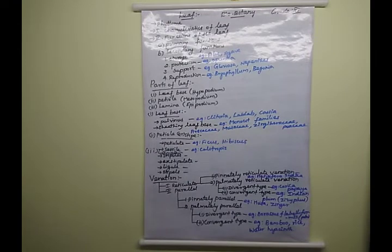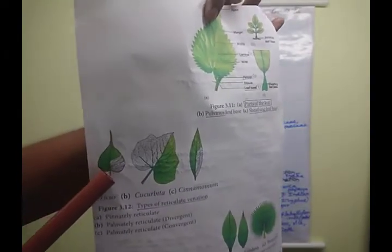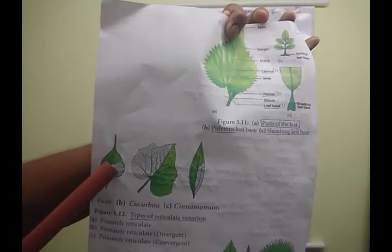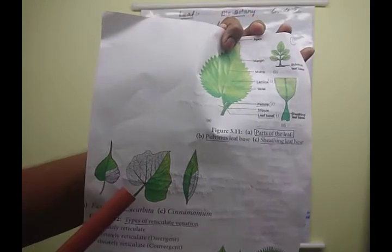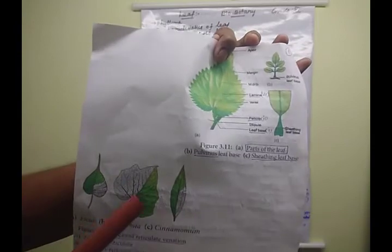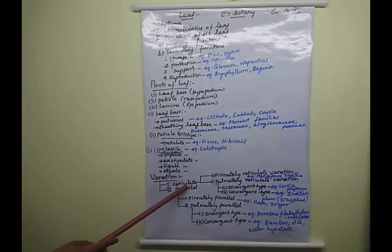In reticulate venation, there is one prominent midrib at the center. From the midrib, many lateral branches arise, and from those, numerous veinlets are produced, finally forming a network-like structure. This type of venation is called reticulate venation.